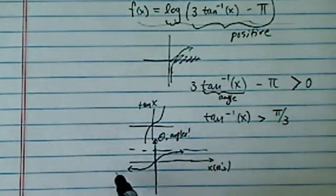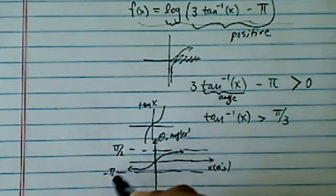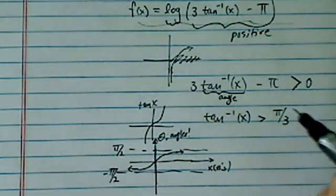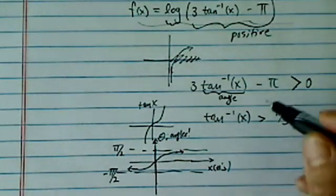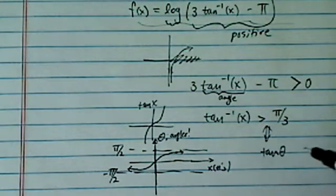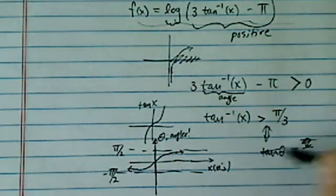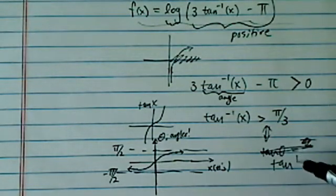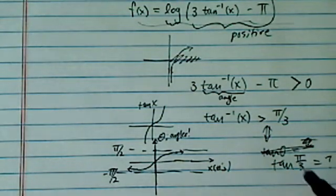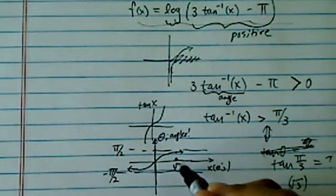Arctangent is bounded by pi over two and minus pi over two. So we're looking for: tangent of what angle theta equals pi over three? Pi over three is 60 degrees, so the tangent equals radical three. The number here is radical three.